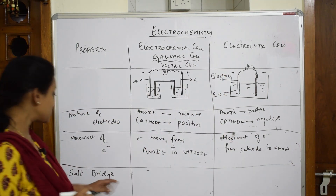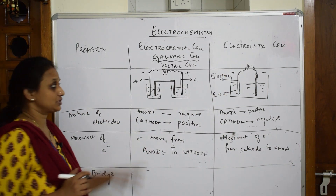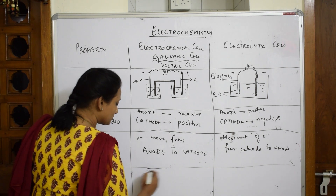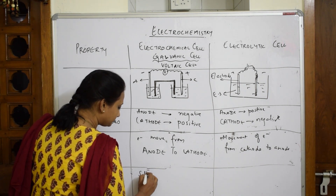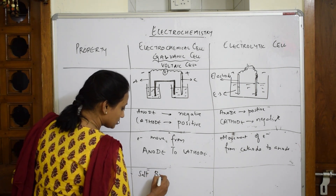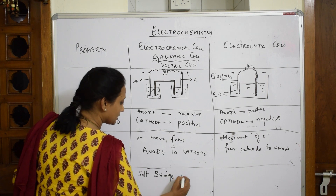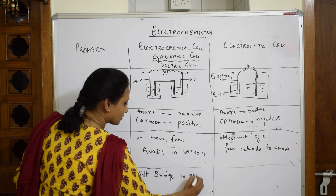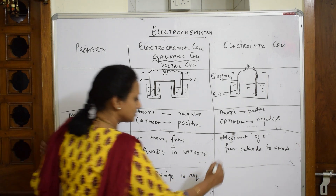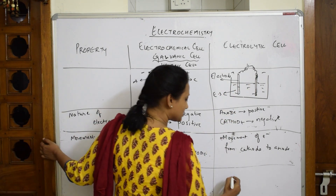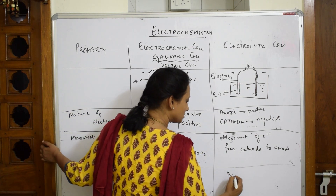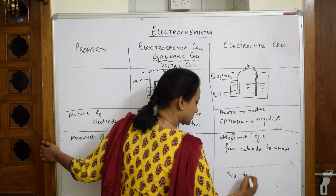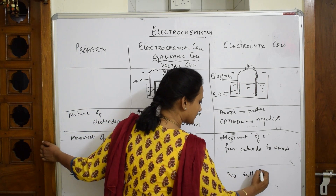Regarding the salt bridge: in electrochemical cells, a salt bridge is required. In electrolytic cells, there is no salt bridge required, since both electrodes are in the same electrolytic solution.